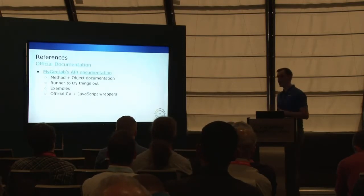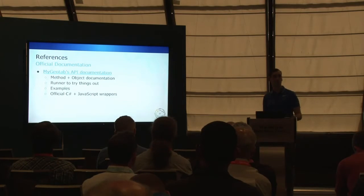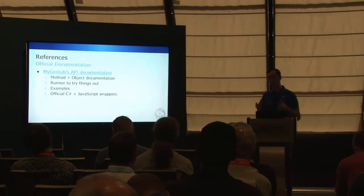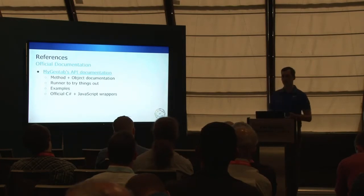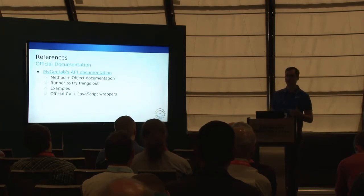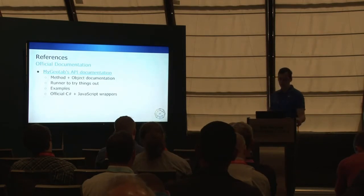Just a couple of references: the API documentation is at my.geotab.com/SDK, or you can search for Geotab on GitHub — all of that is now there. There is method and object documentation covering everything you can interact with, a runner where you can try things out and play around with the API, a ton of examples ranging from adding a vehicle to getting current location, fuel level, and sending text messages, and of course the official C# and JavaScript wrappers.